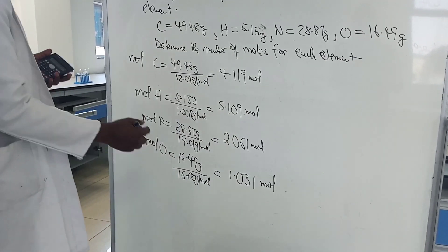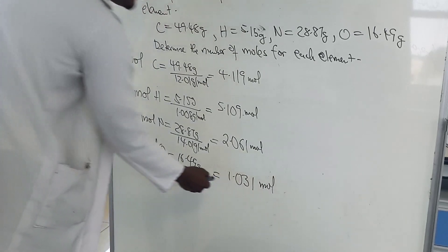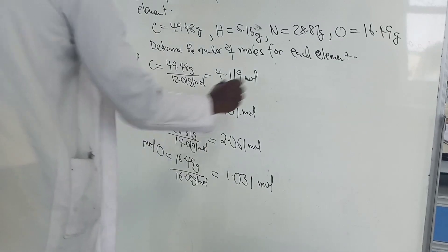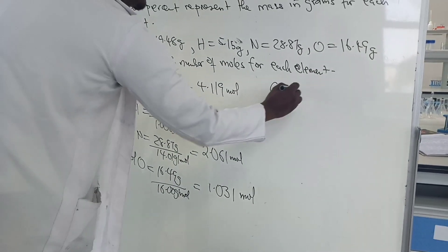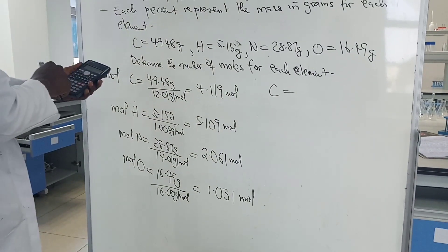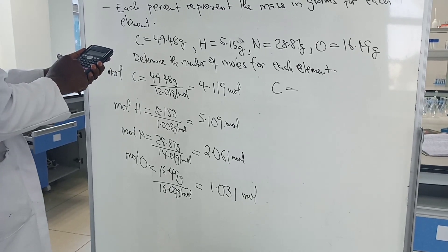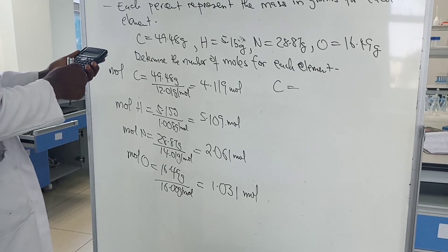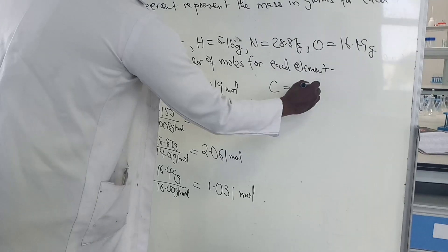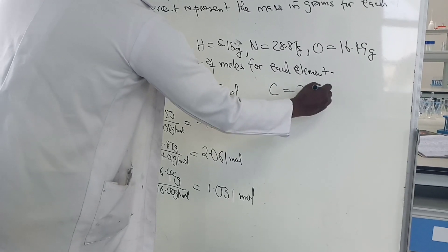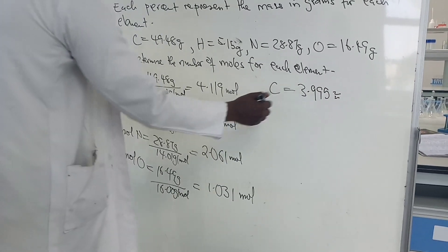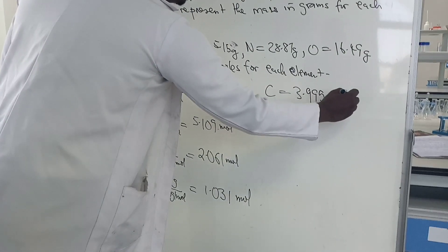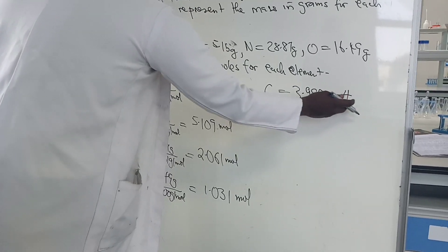We divide through by the smallest value of the number of moles, which is oxygen's value of 1.031. For carbon: 4.119 divided by 1.031 gives us 3.995. Since these ratios must be whole numbers, we round — so carbon is 4.